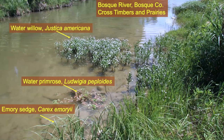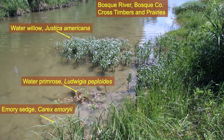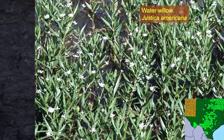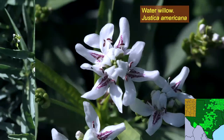Here we are on the Bosque River in Bosque County — three very popular riparian plants: water willow, a native that you should have in your backyard water garden (though you have to be careful when buying water plants because most are exotic, but this one is native); water primrose; and Emory sedge. Here's a close-up of water willow — it spreads with underground rhizomes and has beautiful flowers. Pollinators love to visit. It grows in the middle third of the state.